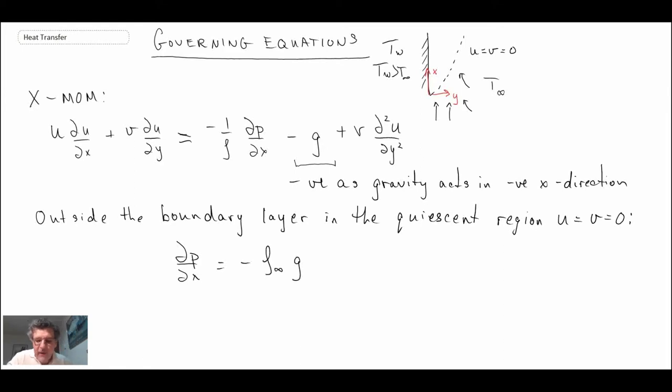And the x-momentum equation in the quiescent region reduces to the following: minus rho_infinity g equals the pressure gradient. I'm going to call the x-momentum equation equation 1, and the quiescent region equation equation 2.